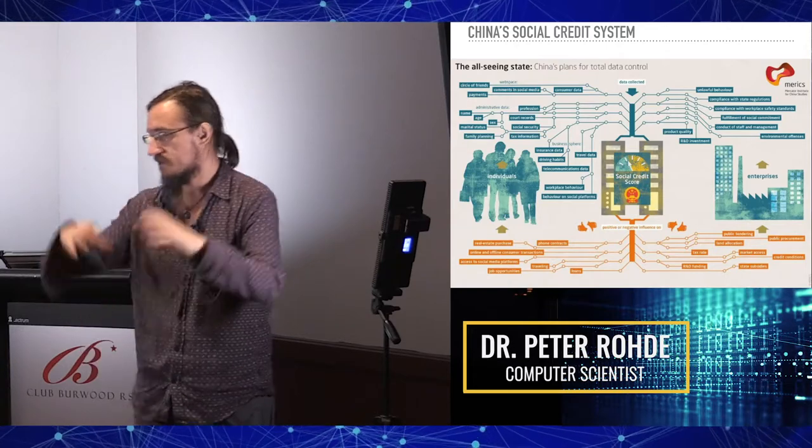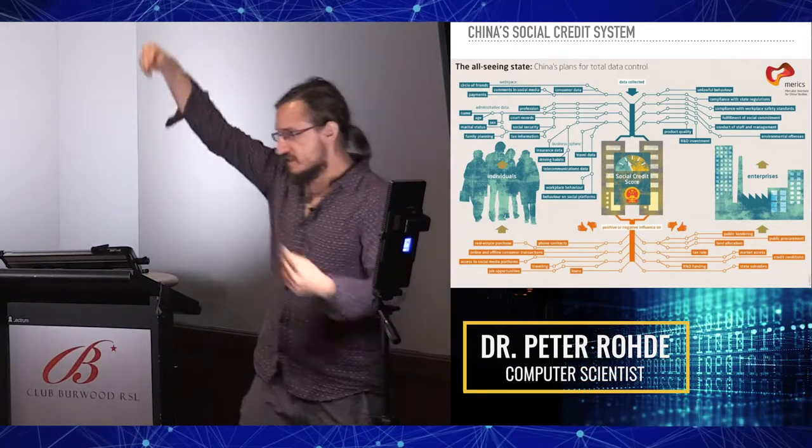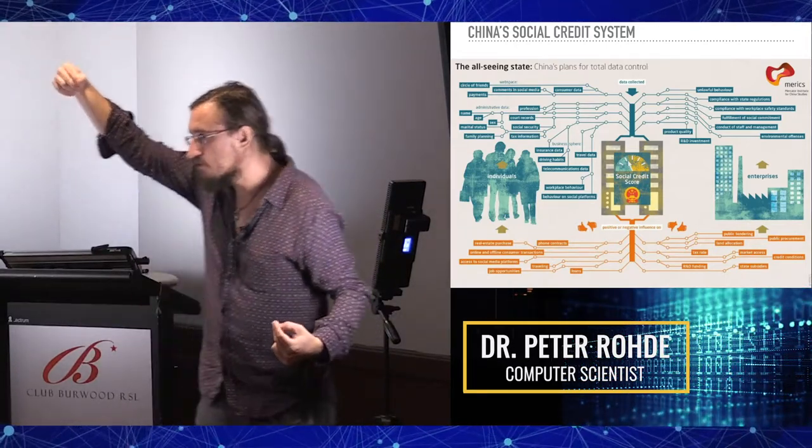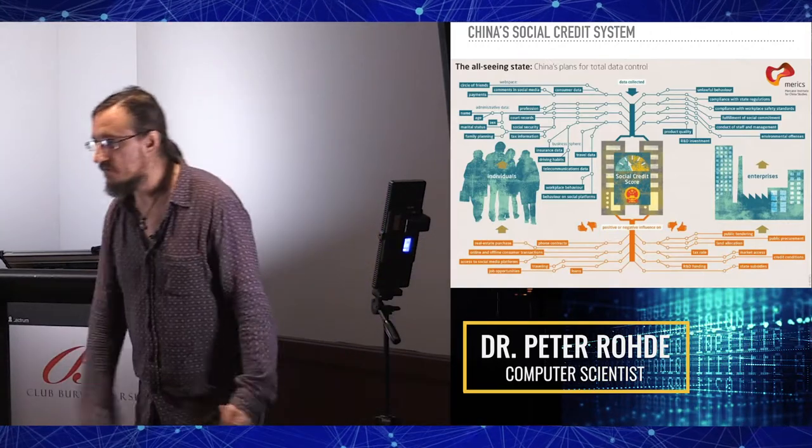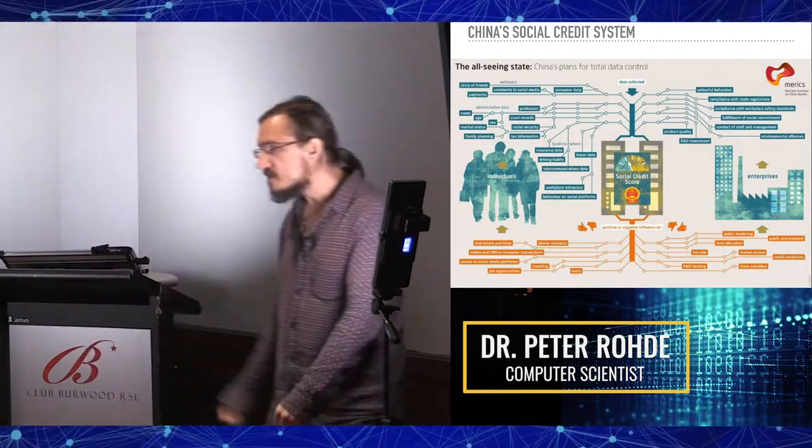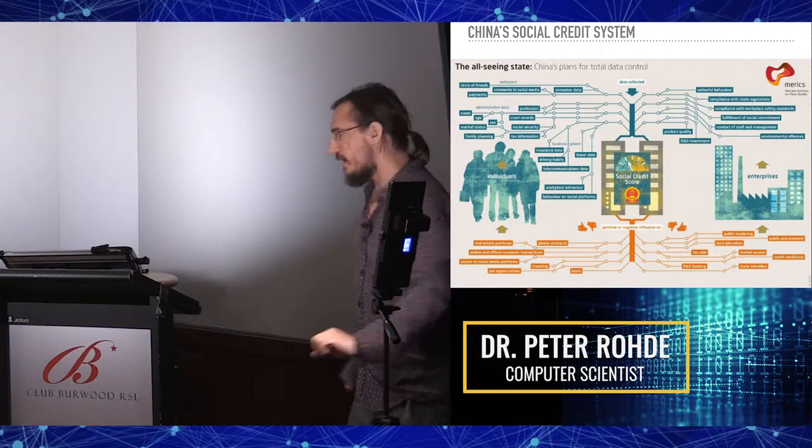If your social credit score goes below a certain amount, you are automatically restricted from using public transport. You can't fly anymore, you can't leave the country, you can't take out a loan anymore. This is a direct attempt to algorithmically manipulate society based on all of the exposures that are previously mentioned: the interception, the association, the clustering algorithms, the statistical inference of who you are and what you believe and what the likelihood of you being a danger to the system is. That's what this is about.